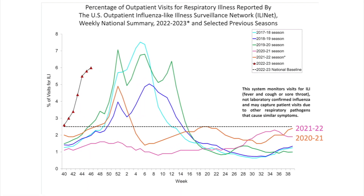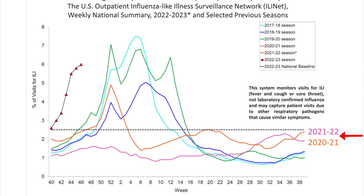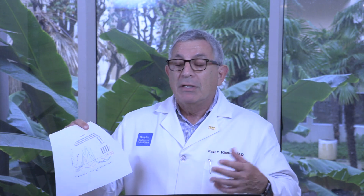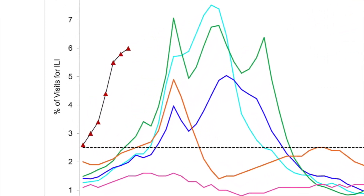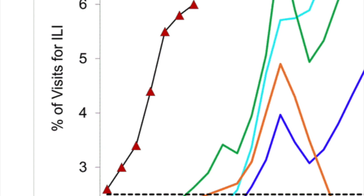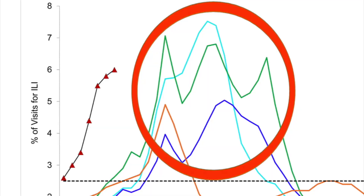The flu season started very early and very aggressively this year. Looking at previous flu season years, 2020 and 2021 really didn't have much of a flu season, mostly because of all the things we were doing to avoid COVID — social distancing, wearing masks, washing hands. As we eliminated those public health measures, flu has come back aggressively and earlier than usual compared to pre-pandemic years of 2017, 2018, and 2019.